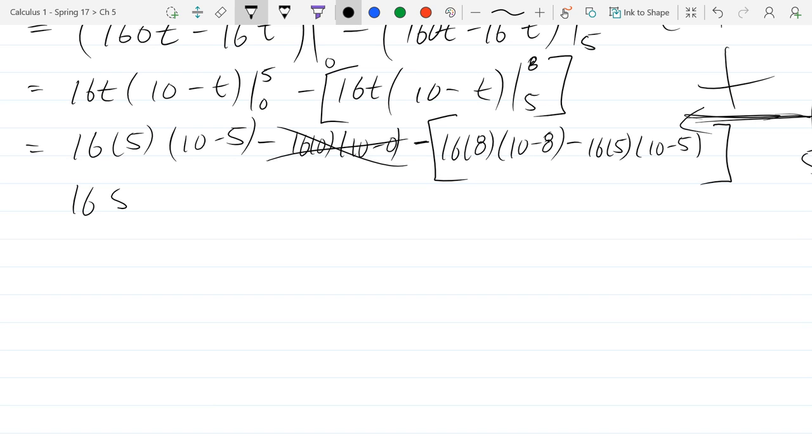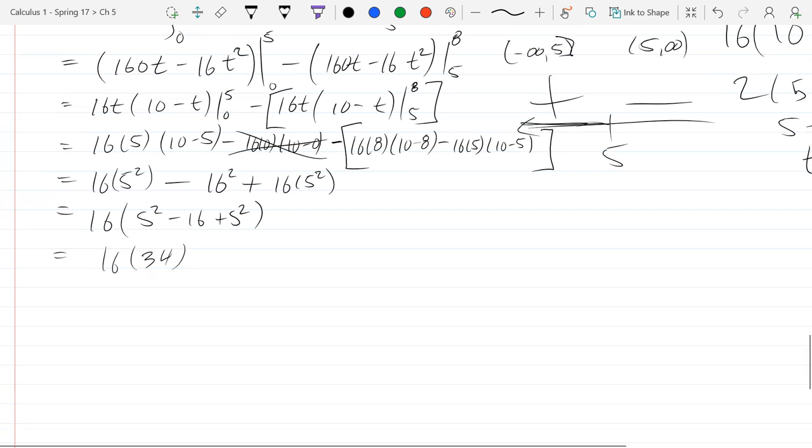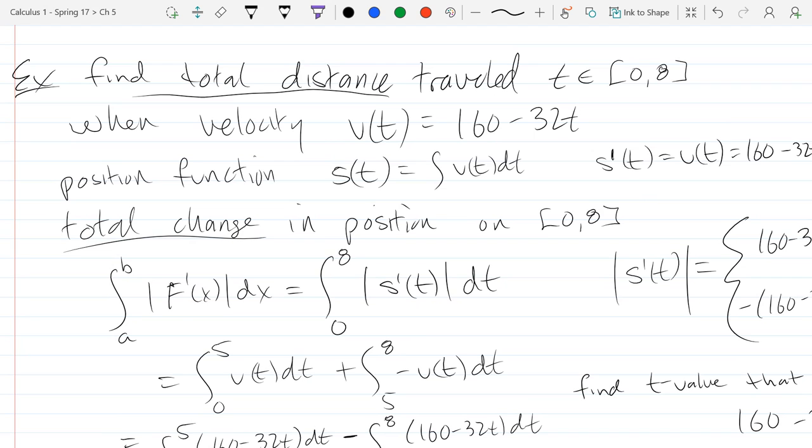So 16 times 0 is 0, so that whole term is disappearing. And we got 16 times 5 squared minus. So we got 10 minus 8 is 2, times 8 is 16, so that's 16 squared plus, so we got minus a negative. And this is also 16 times 5 squared. So we got 5 squared minus 16, so we got 5 squared minus 16 plus 5 squared. So 50 minus 16 plus 34, maybe. Whatever that number is good enough, I'm not multiplying that out. So that is how much this object traveled in 8 seconds.